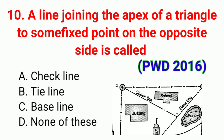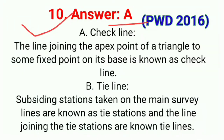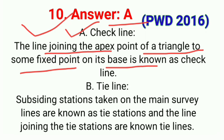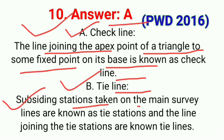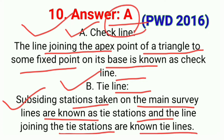Question number ten: A line joining the apex of a triangle to some fixed point on the opposite side is called. The correct answer is option A, check line. A check line joins the apex point of a triangle to some fixed point on its base. A tie line joins tie stations, which are subsidiary stations taken on main survey lines. So the correct answer is option A.